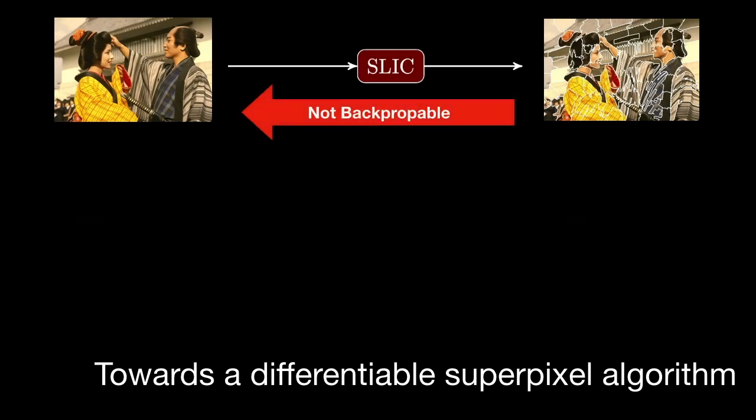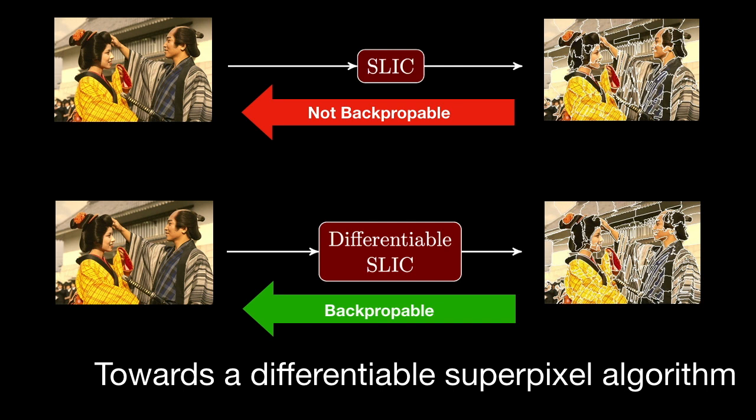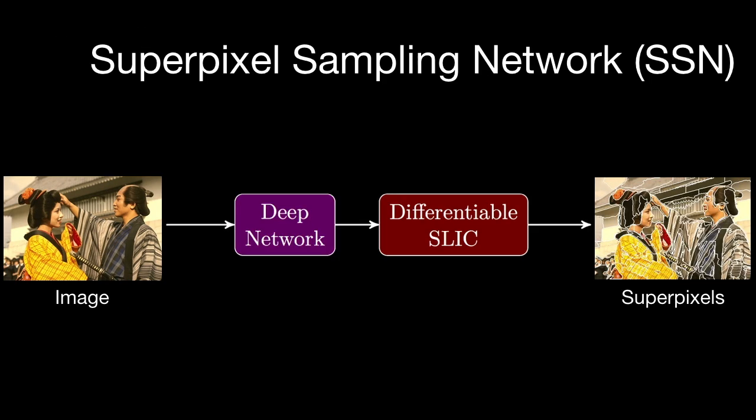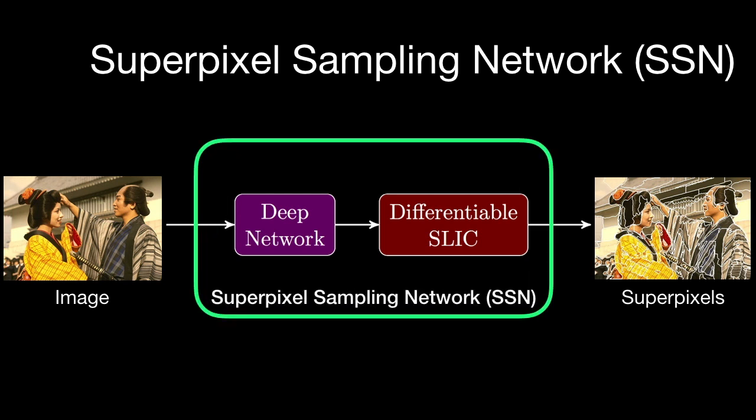We start with the widely used SLIC superpixel algorithm, which is not backpropagable, and turn it into a differentiable algorithm by relaxing the nearest neighbor constraints. We refer to this new differentiable superpixel algorithm as differentiable SLIC. Since differentiable SLIC is backpropagable, we can augment it with a deep network and train the whole network end-to-end, resulting in an end-to-end learning architecture for superpixel segmentation, which we call superpixel sampling networks.